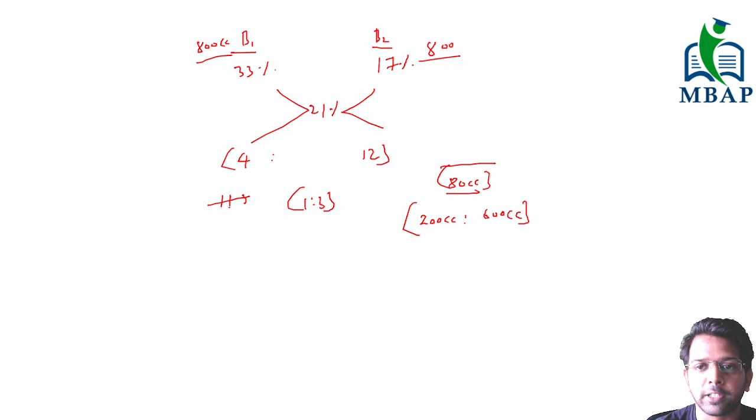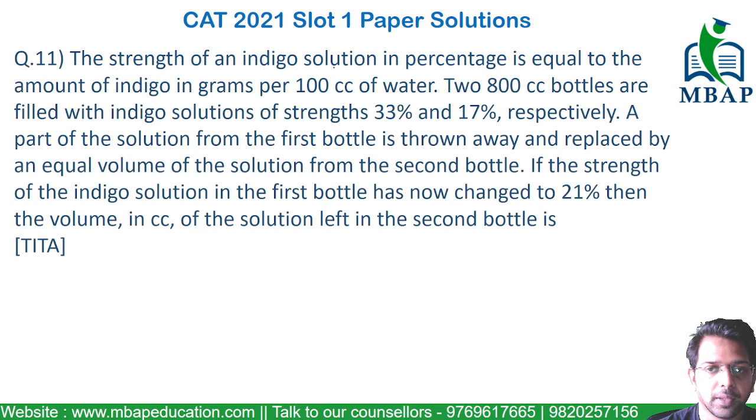Now if 600 cc is coming from bottle 2, the leftover volume would be 200. The answer for this question, the volume of solution left in the second bottle will be 200 cc. Because 200 cc has been taken from bottle 1, and 600 cc has been taken from bottle 2.